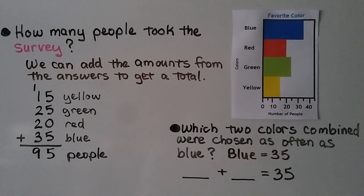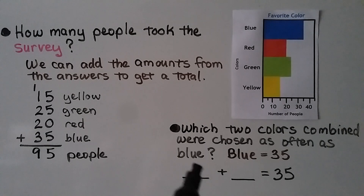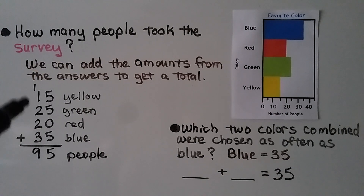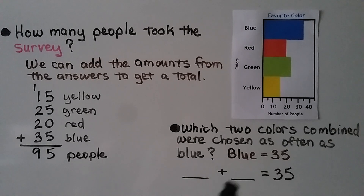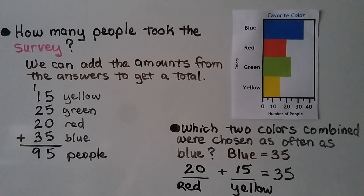Using the data from the bar graph, which two colors combined were chosen as often as blue? Blue is 35, so we need two colors whose values equal 35. Which two colors have answers that add up to thirty-five? If you said red (20) and yellow (15), you're right! Red plus yellow equals thirty-five: 20 + 15 = 35.